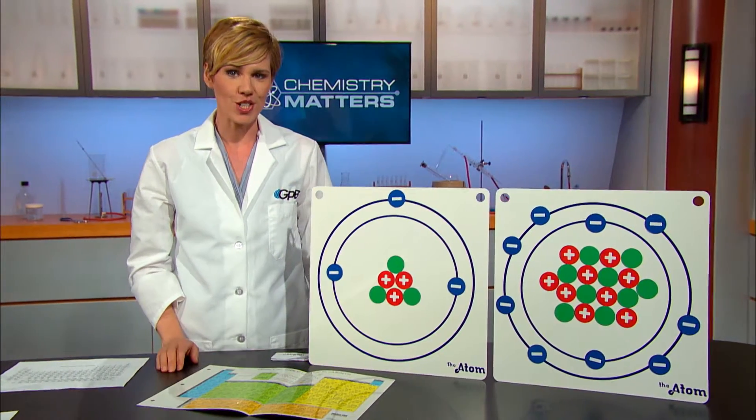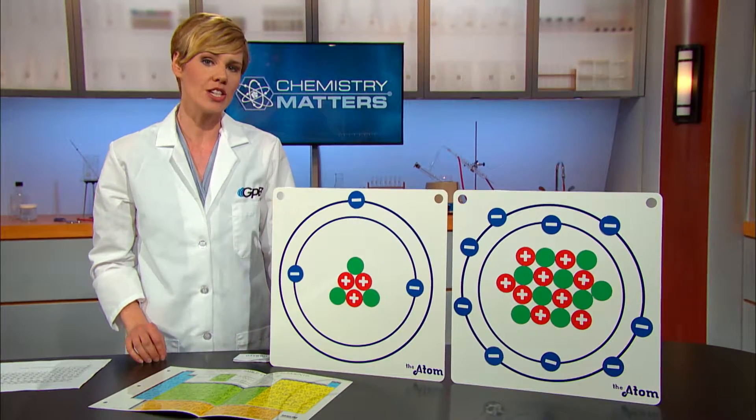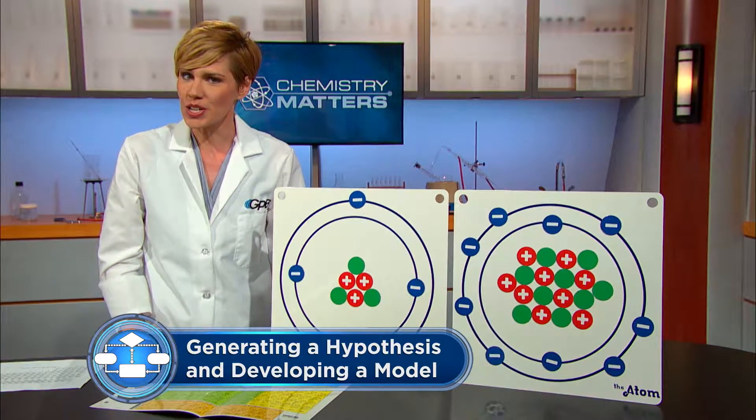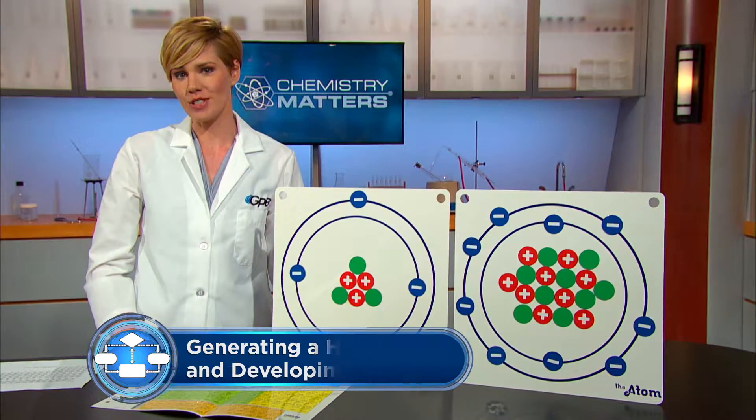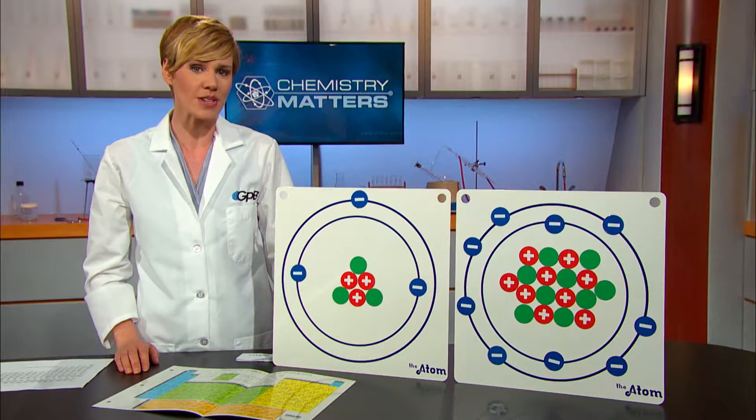Based on all of that research, chemists have developed a shorthand notation for describing the location and energy of an electron, called electron configuration. Knowing the order in which electrons fill the various energy levels helps us predict and understand the physical and chemical properties of different atoms.